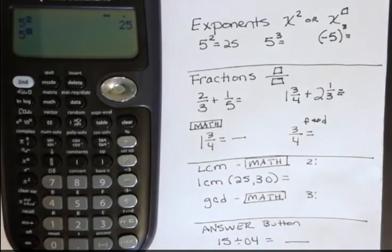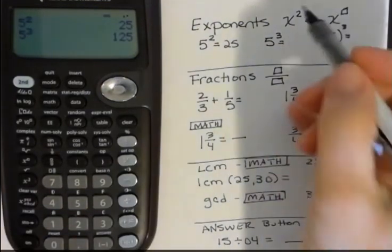So now I hit the 5 with the box, and then it's blinking and saying, well, what power are you interested in, and then I hit the 3. So 5 to the third power is 125.